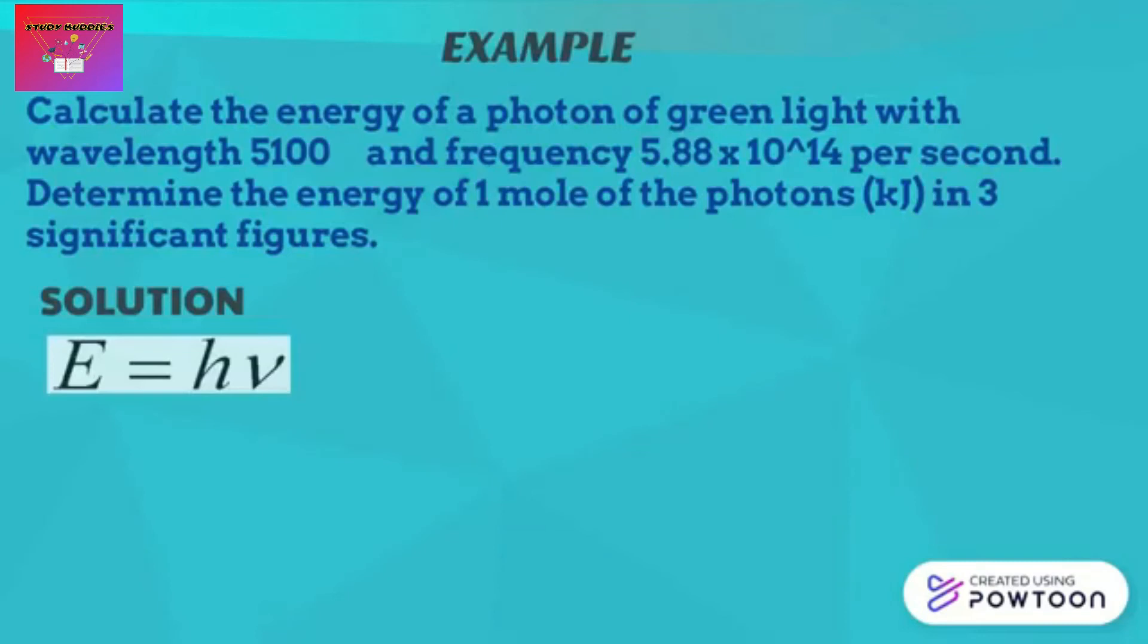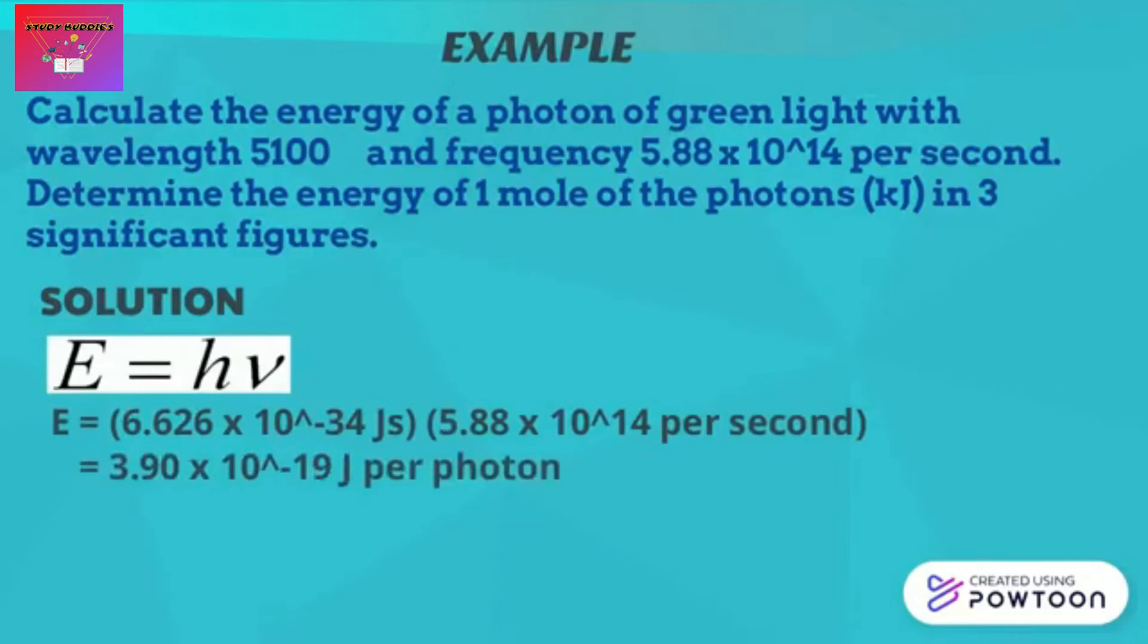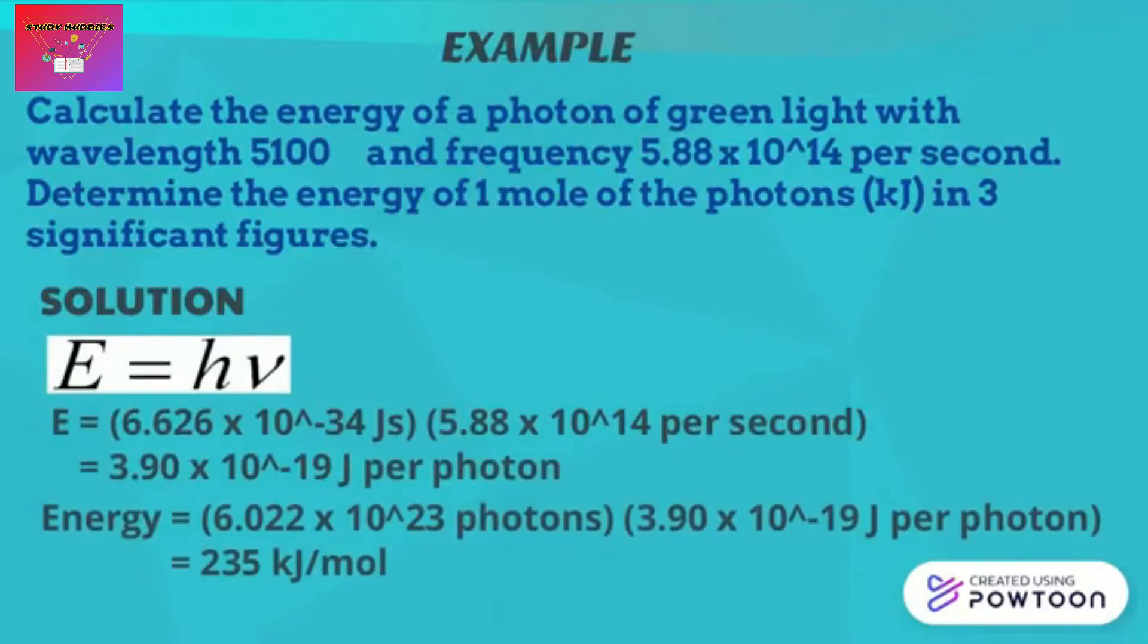The equation for energy equals Planck's constant multiply with frequency. The value of Planck's constant is 6.626 times 10 to the power of negative 34 joule second, and the frequency is 5.88 multiplied with 10 to the power of 14 per second. When we multiply both values we get 3.90 times 10 to the power of negative 19 joule per photon. For one mole we have 6.022 times 10 to the power of 23 photons. When we multiply the number of photons with the energy per photon, we get the total energy for one mole of photons which is 235 kilojoule per mole.